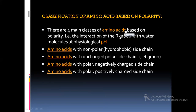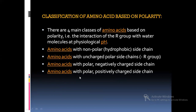There are four main classes of amino acids based on the polarity of the R group, that is the interaction of the R group with water molecules at physiological pH. We have: amino acids with non-polar side chain, amino acids with uncharged polar side chain, amino acids with polar but negatively charged R group, and amino acids with polar but positively charged R group.